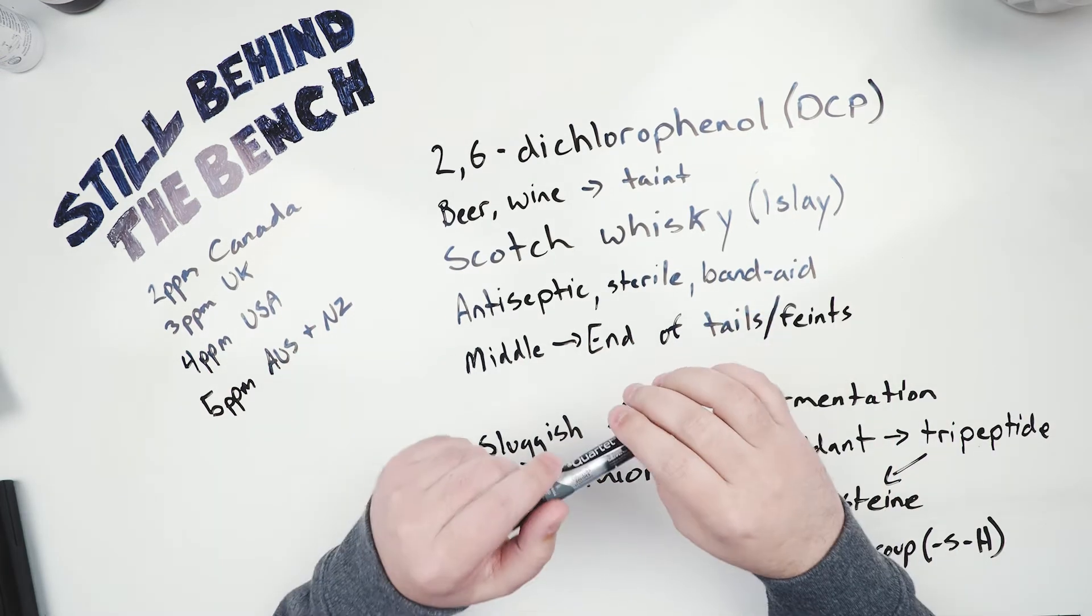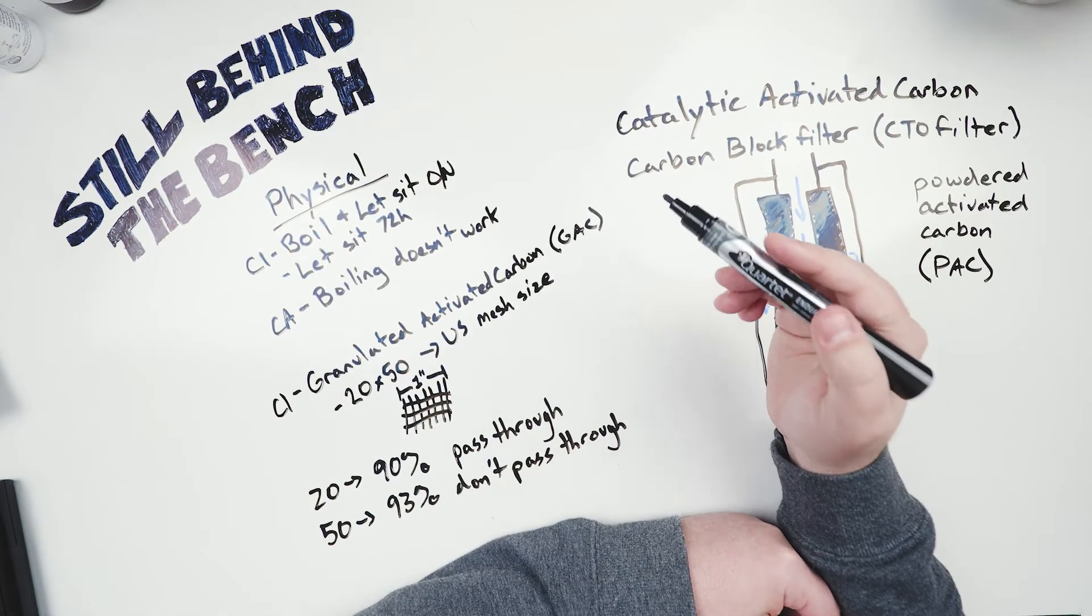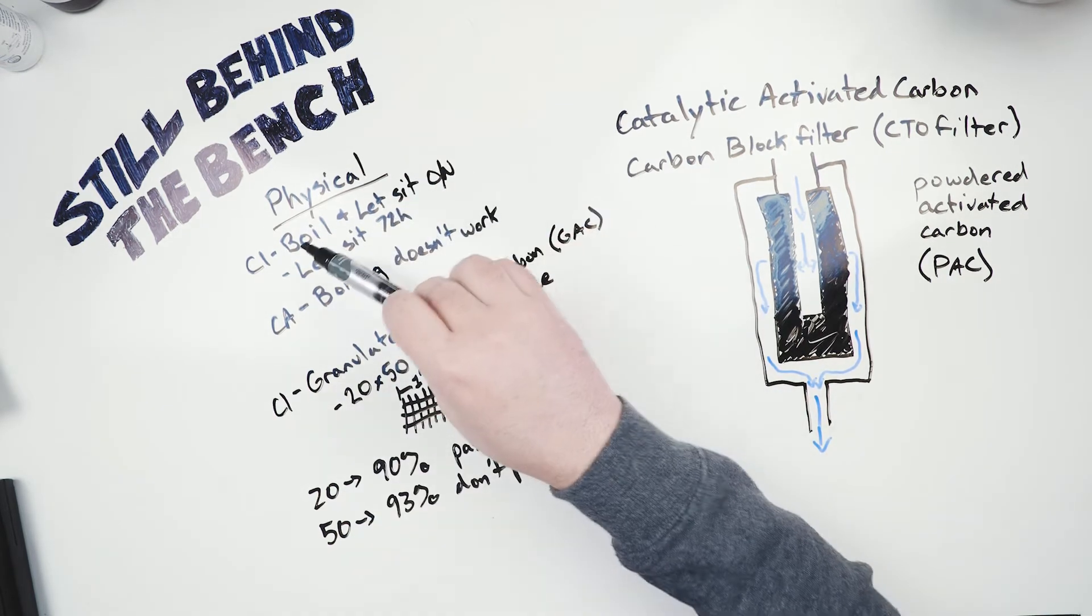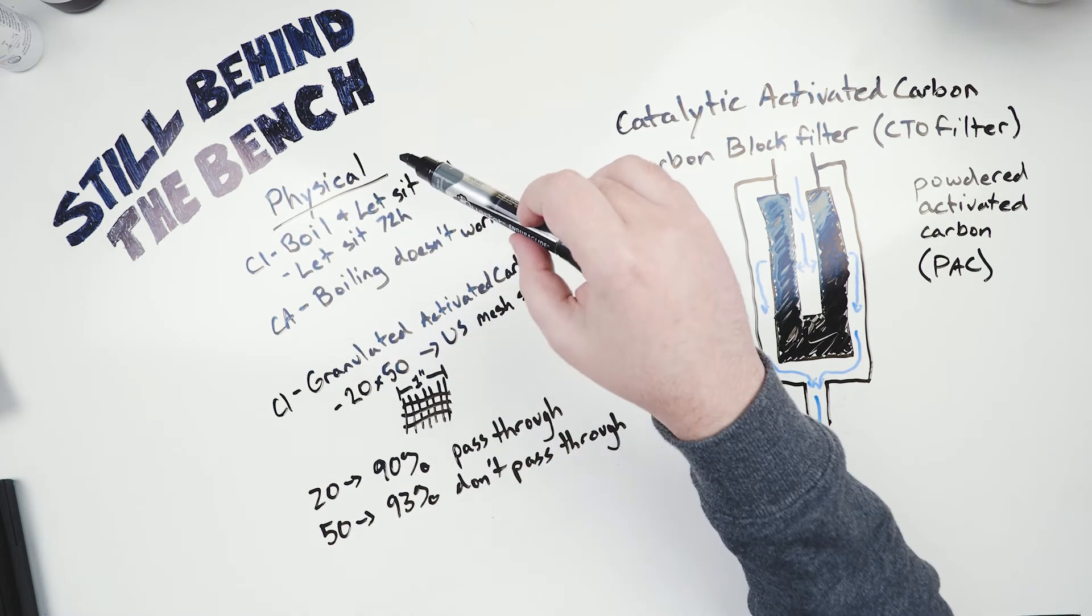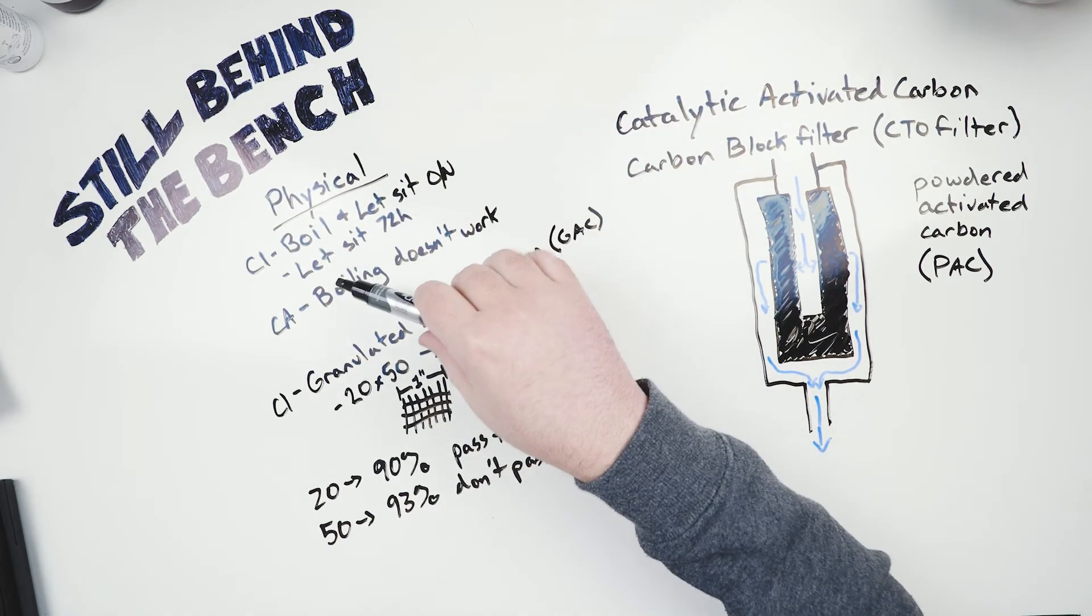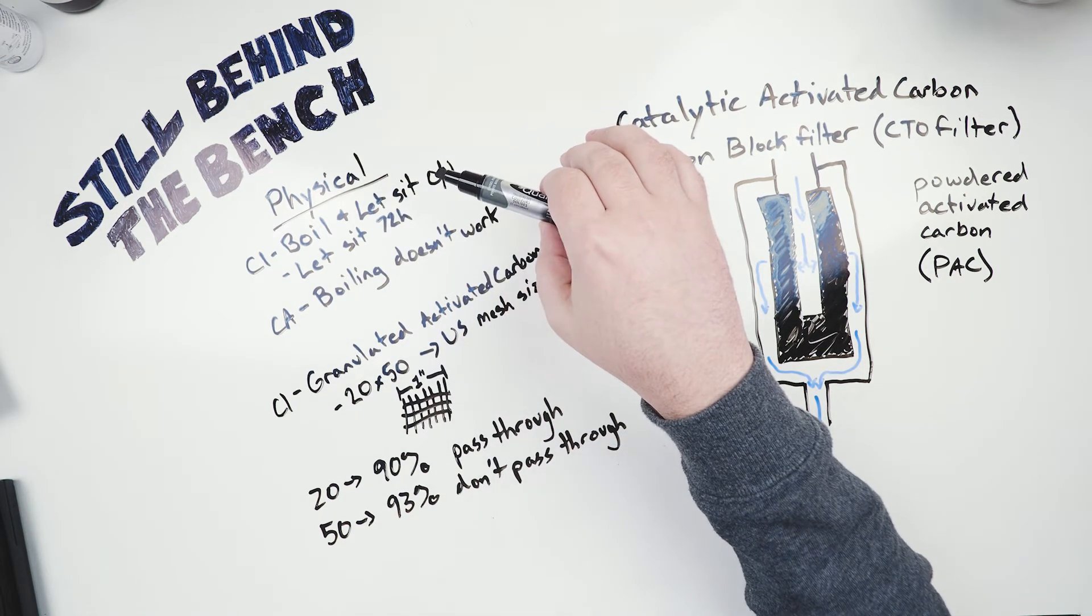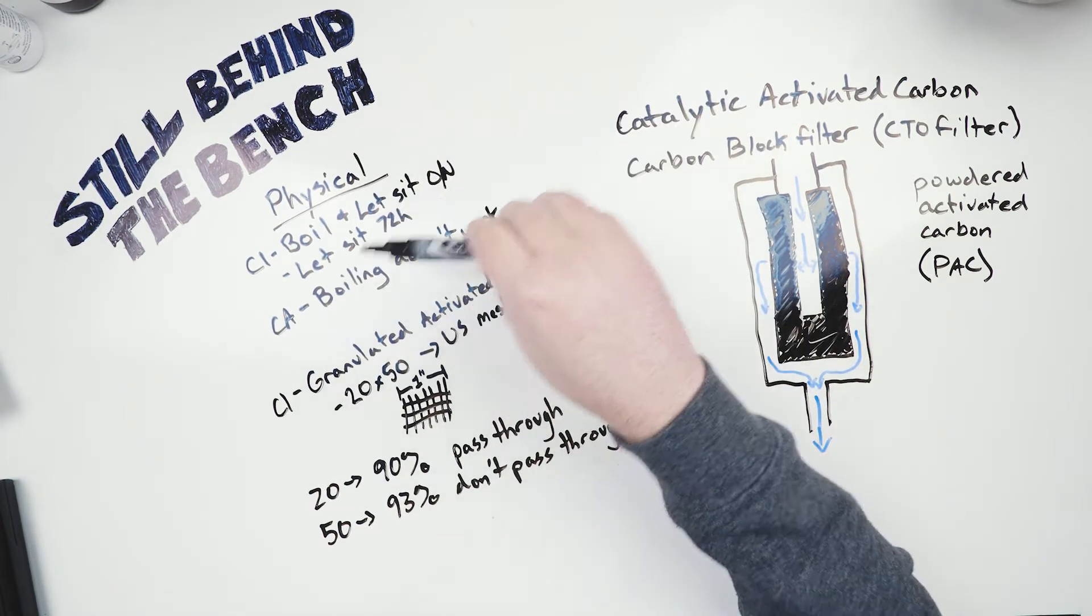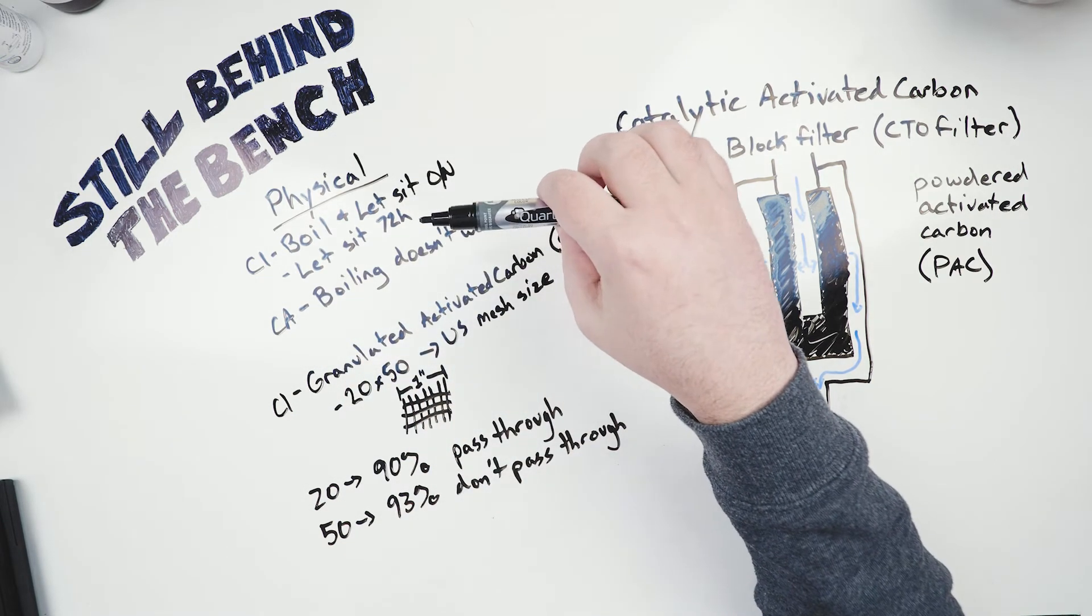So let's get into how do we get rid of chlorine and chloramine. Okay so how do we get rid of them? Well you can use both chemical and physical methods. I'm going to talk about the physical methods first. In the case of chlorine you can literally boil it and let it sit overnight. And in the morning the concentration will have either dropped to zero or dropped low enough that you won't have any problems at all. And technically you can just let it sit out for about 72 hours. And the levels will have dropped more than enough if not completely depending on how much was there in the first place. Unfortunately for chloramine though boiling doesn't work because it's not volatile enough.